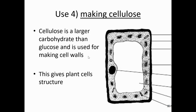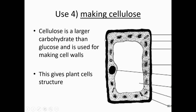Glucose can also be joined together into a larger carbohydrate as cellulose, which is used for making cell walls. Plant cells have cell walls but animal cells don't. The cell walls give plants structure, keeping them rigid and upright. Cellulose comes from glucose and therefore cellulose is actually a carbohydrate. It's a weird thought — plants are made of sugar, except this kind of sugar we can't digest very well.